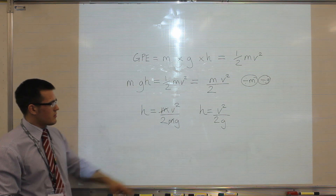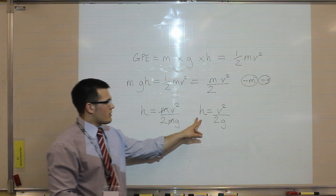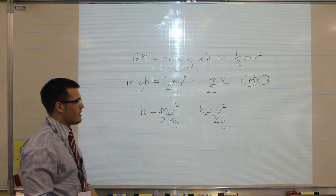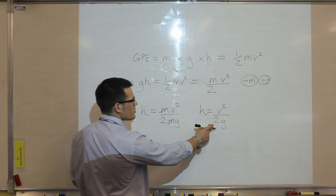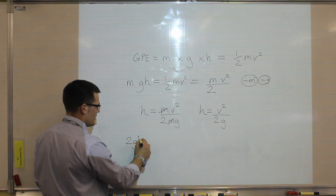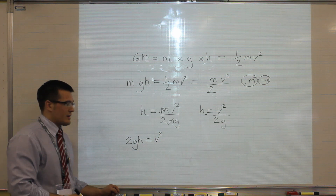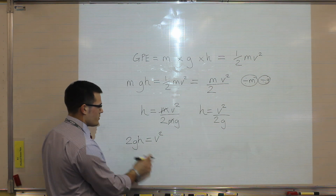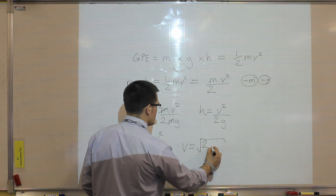So that's an equation to allow H, or the height, to be the subject. I can then rearrange this equation to give me an equation for the acceleration due to gravity, but more useful is V, the velocity. To rearrange this equation to give me V, I multiply both sides by 2G, so I end up with 2GH equal to velocity squared. And just as with the kinetic energy equation, if I need to remove a squared function, I do the opposite — which is square root. So velocity is equal to the square root of 2GH.